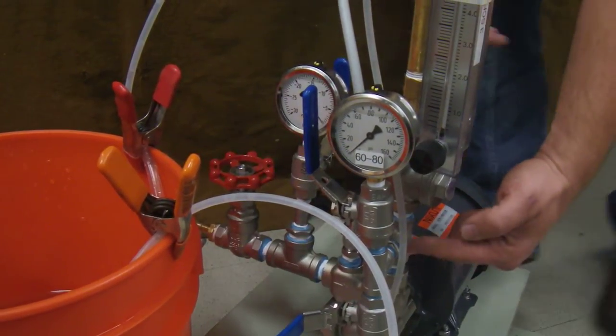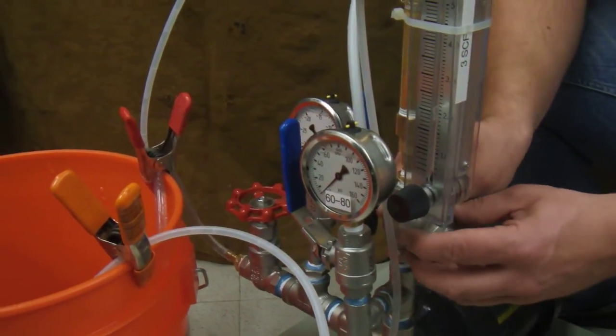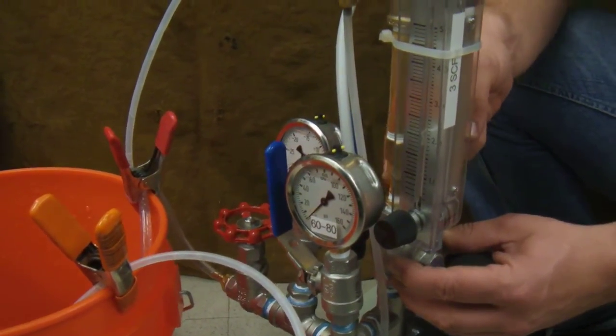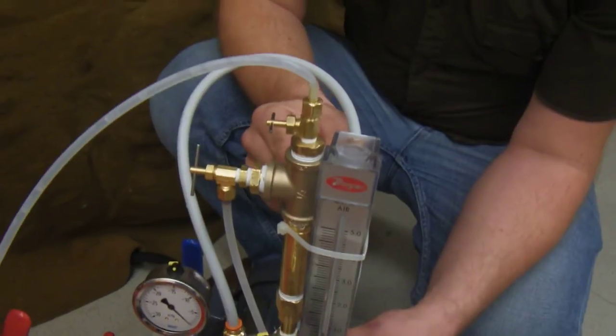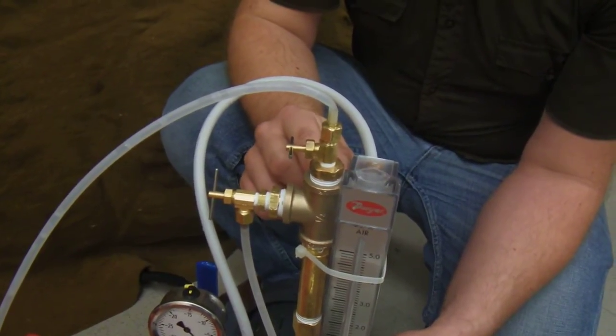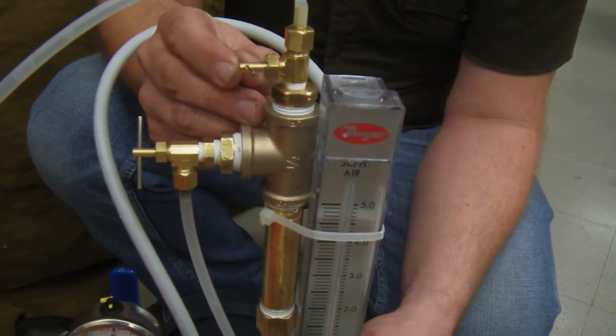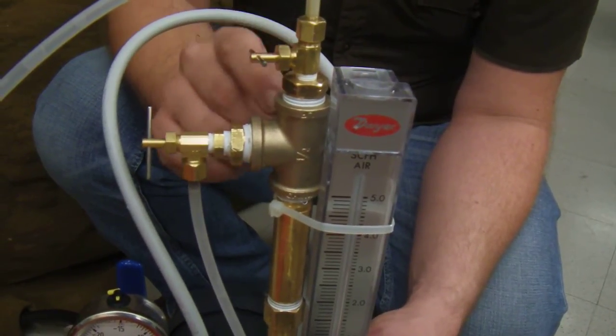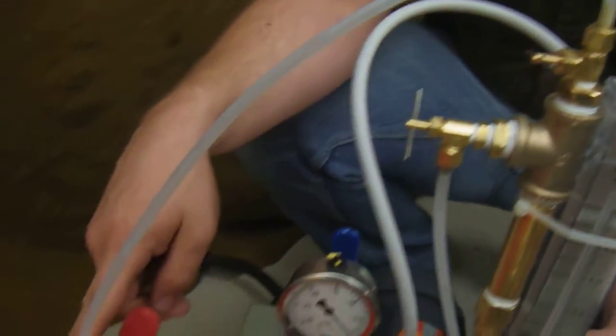Then the fluid goes up from the outlet through this check valve right here and into the column, the separation column. So the microbubble air solution passes up through here. Any extra air that's in solution will rise to the top. And this is a bleed valve that's left open just a tiny bit to let any air that shows up in this pocket at the top leak out and go back into the bucket.